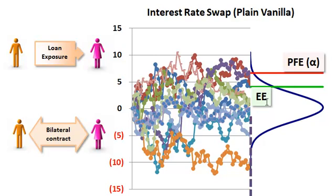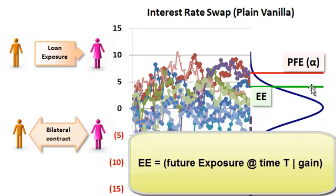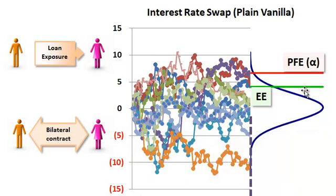The two key terms we use are expected exposure and potential future exposure. Expected exposure is going to be in the gain territory, because it's the expected exposure conditional on a mark-to-market gain — conditional only on the value of this contract in the future being positive. Then, conditional on it being positive, what's our expected gain on the contract? That is our expected exposure. Because if we're in a gain and our counterparty defaults, that's our loss.